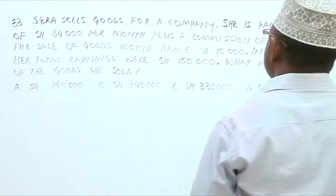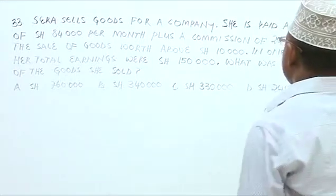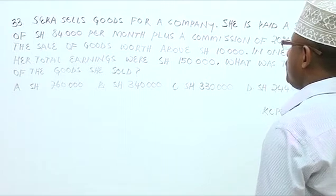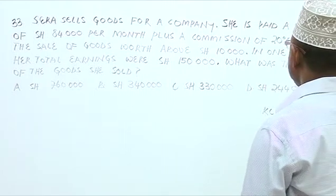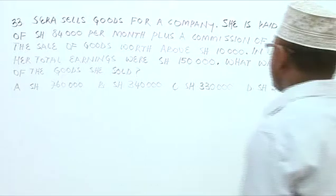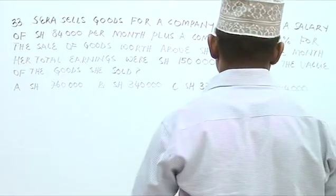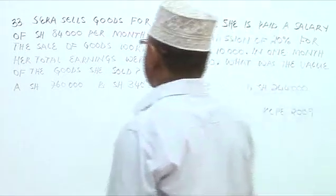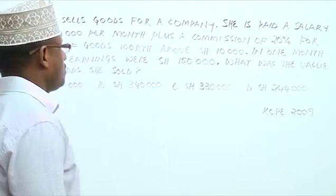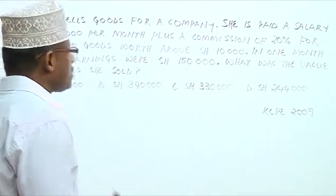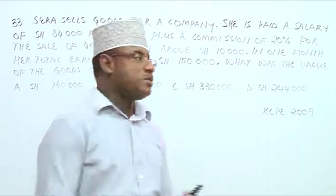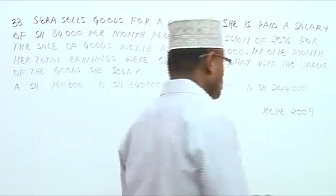Sarah sells goods for a company. She's paid a salary of $84,000 per month plus a commission of 20% for sales of goods above $10,000. In one month, her total earnings were $150,000. What was the value of the goods she sold?